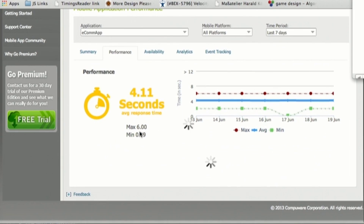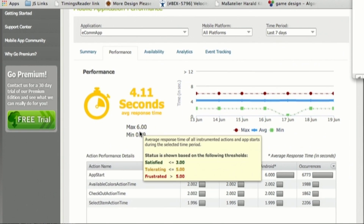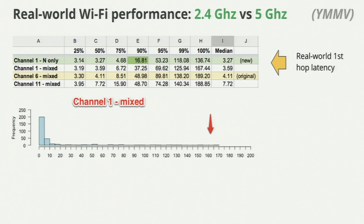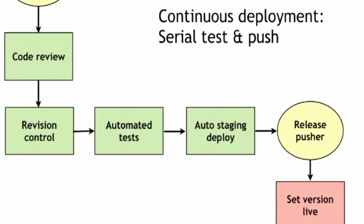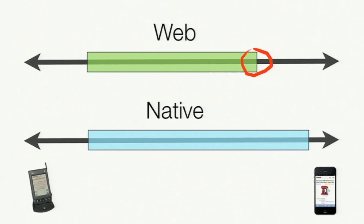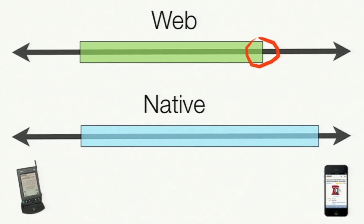The mission of Velocity is to get the word out to the people building websites — the most popular websites that people are going to today — about how to make those websites faster, more reliable, more scalable. There's just a lot of sharing of these best practices and lessons learned that you can take home and use right away.